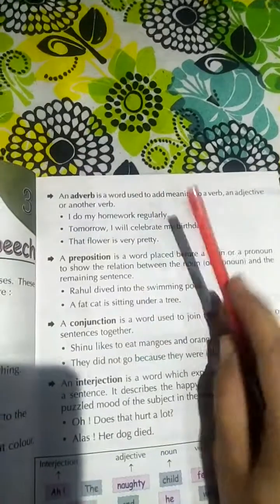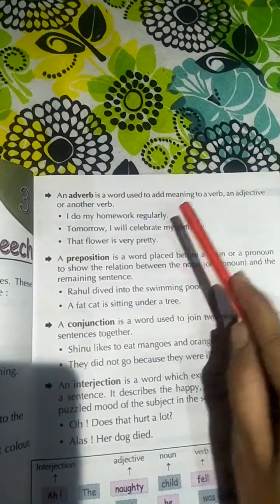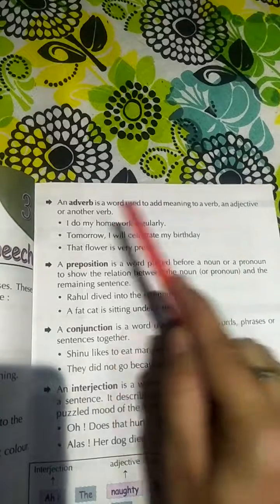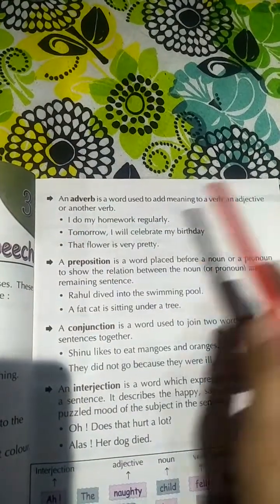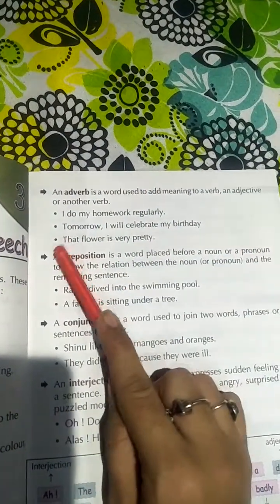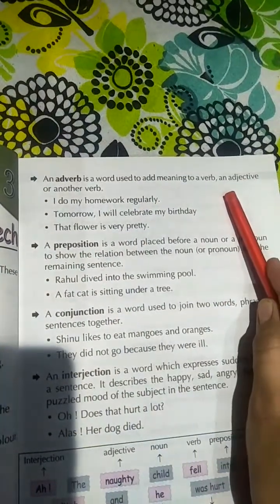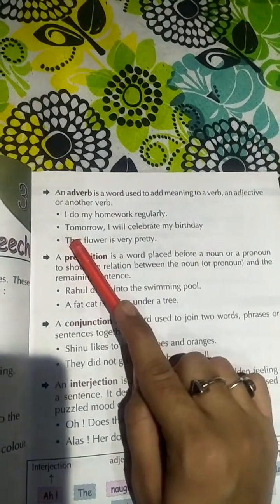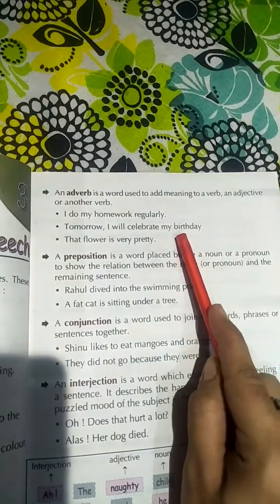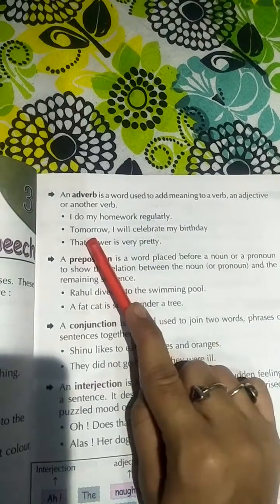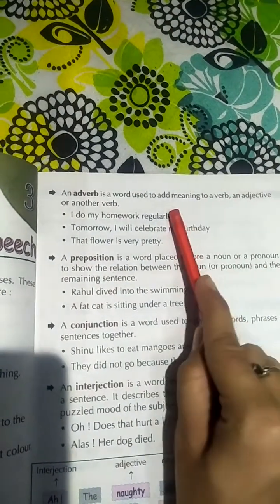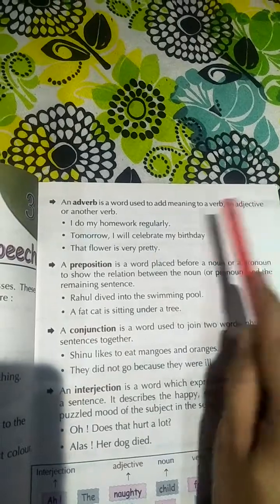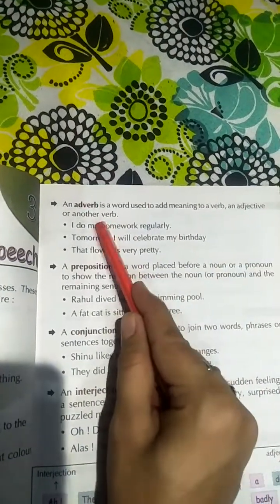Fifth is adverb. Adverb is a word used to add meaning to a verb, an adjective, or another adverb. For example: 'I do my homework regularly' — regularly is an adverb. 'Tomorrow I will celebrate my birthday' — tomorrow is an adverb. Jo something noun ko, verb ko, adjective ko meaning deta hai, that is the adverb.